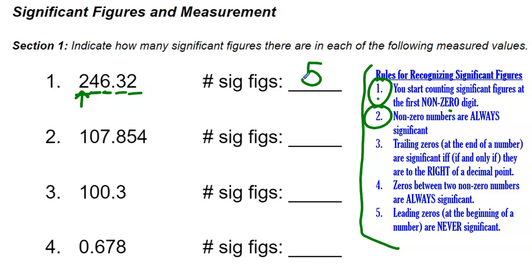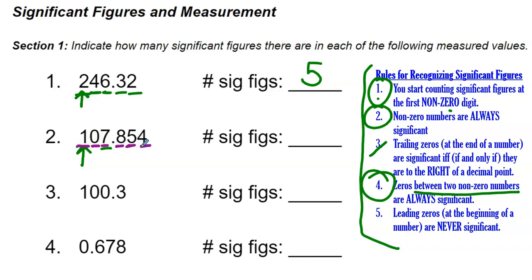Moving on to number two, I notice there is a zero, so I need to pay careful attention to rules three, four, and five. This zero is not a trailing zero, so rule three doesn't apply. Rule four says zeros between two non-zero numbers are always significant, and this zero is between the one and the seven. So we start counting at the one and include that zero. Counting everything, we get six significant figures.